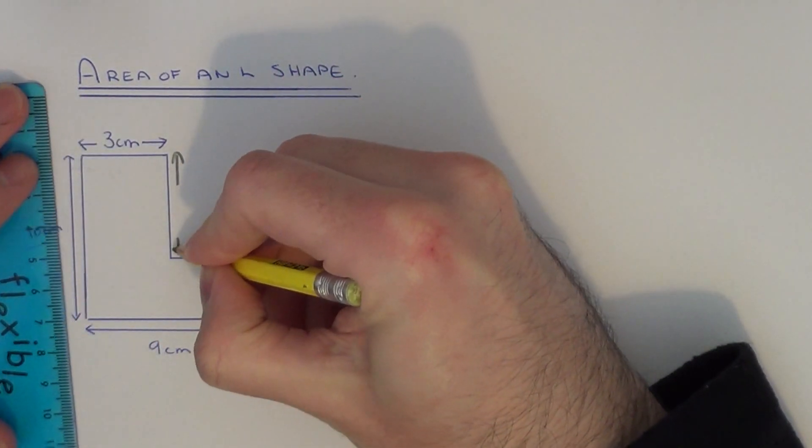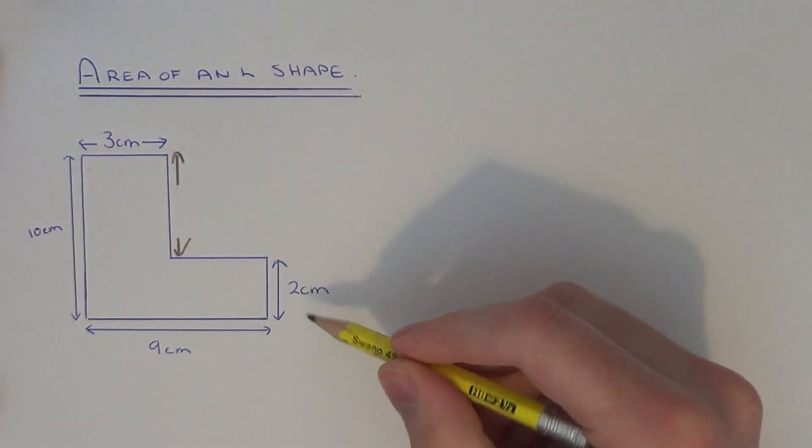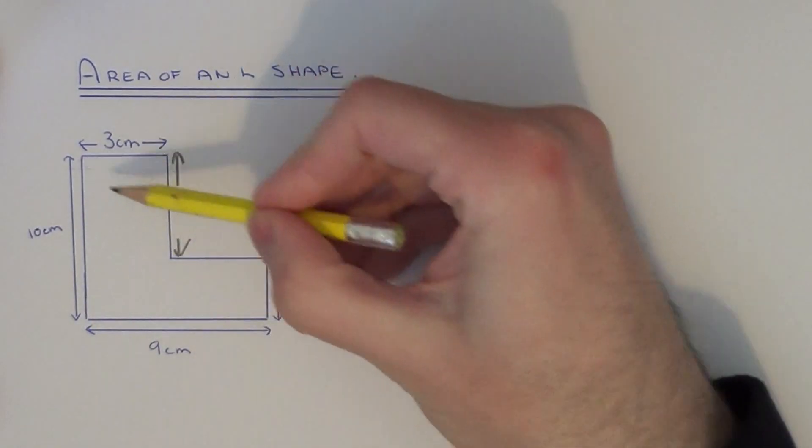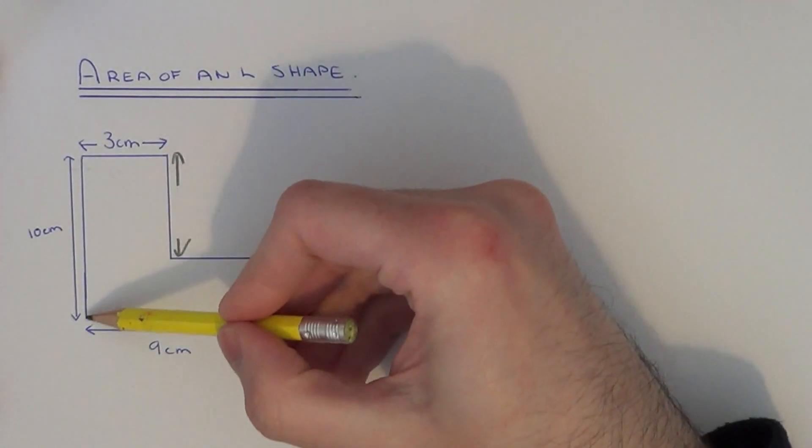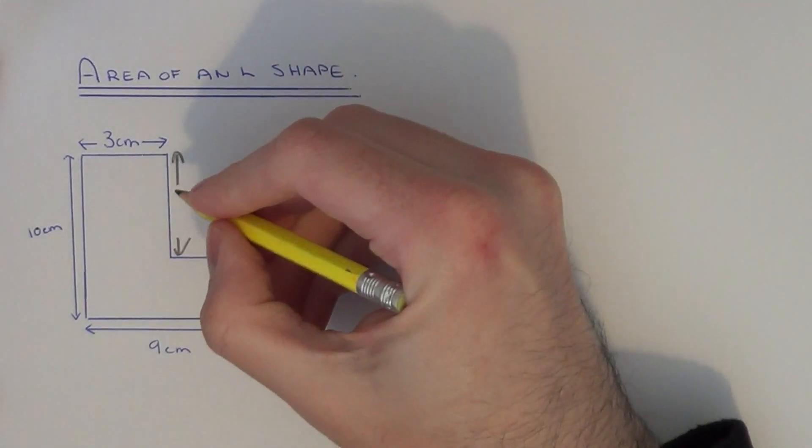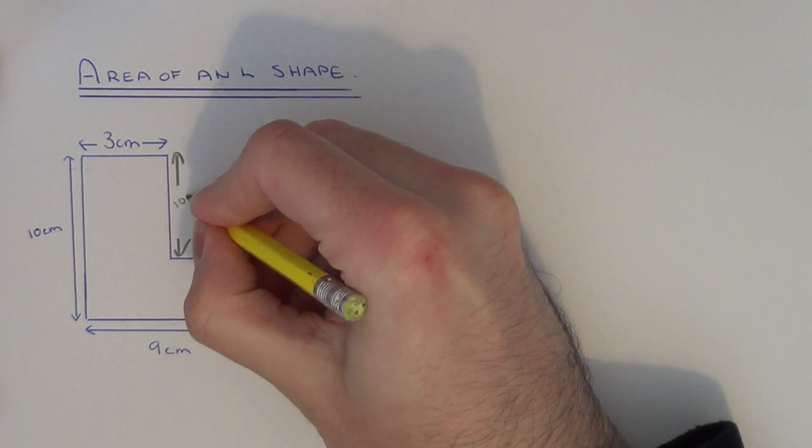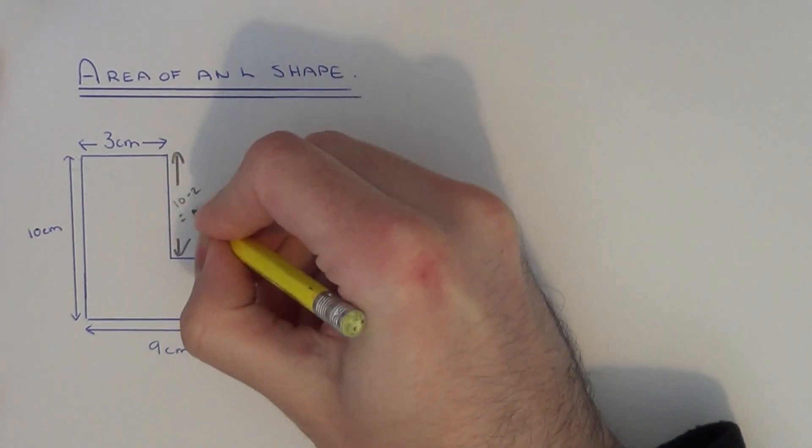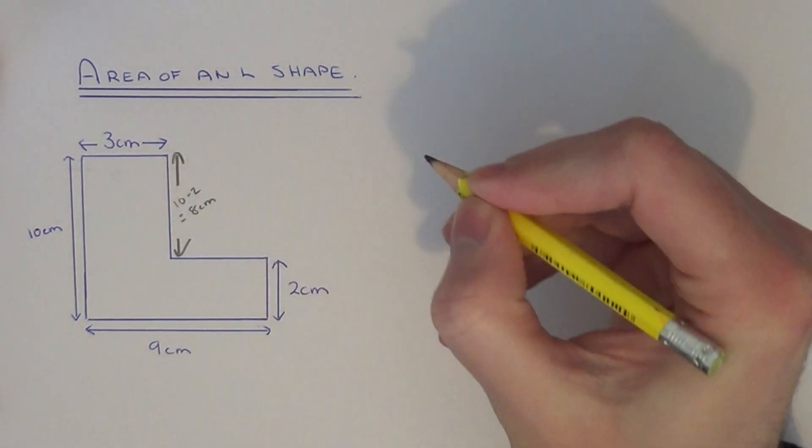To get this side we just need to look at the vertical side lengths. All the way up is ten, this one is two. So if we do ten take away two this will give us this side as eight centimeters.